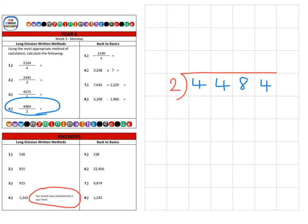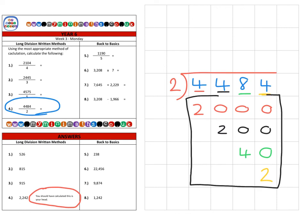Half of 4000 is 2000. Half of 400 is 200. Half of 80 is 40, and half of 4 is 2. When we put all that together, we end up with a final answer of 2242.